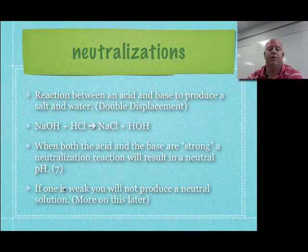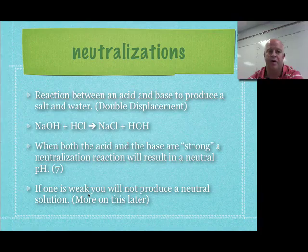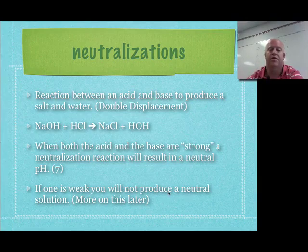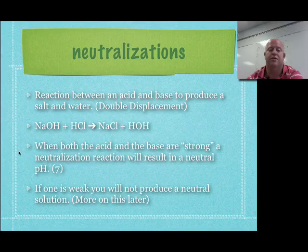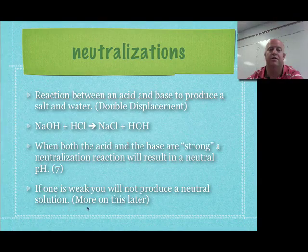If one of your acids or bases is weak, meaning it only partially ionizes in solution, not all the ions are present to get complete neutralization. So if you use equal amounts of your acid or base in that scenario, you will not produce a neutral solution. That process has to do with something called salt hydrolysis and also relates to buffers, which we'll get into later in this unit. When you have two strong substances, an acid and a base, you get pH 7 — whereas if one of them is weak, you won't get that.